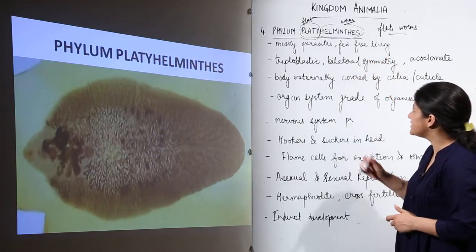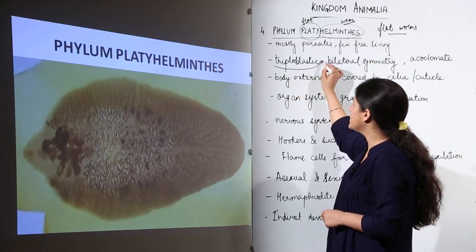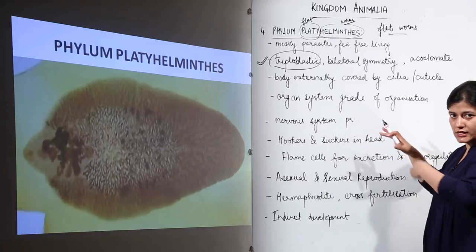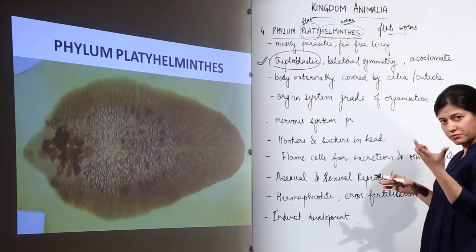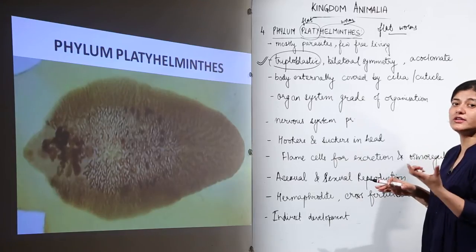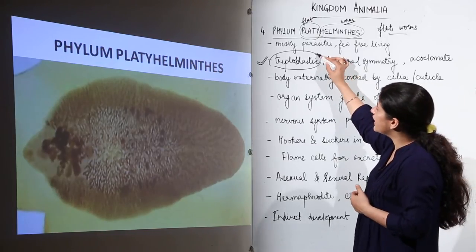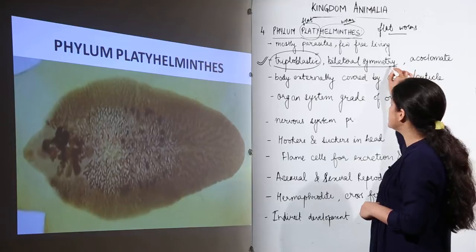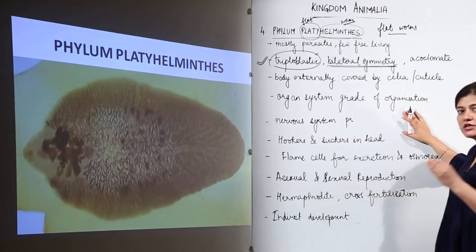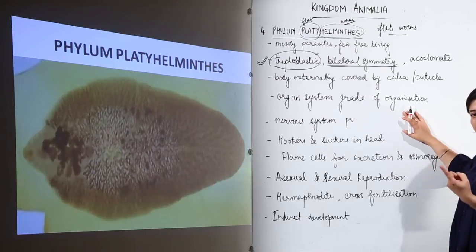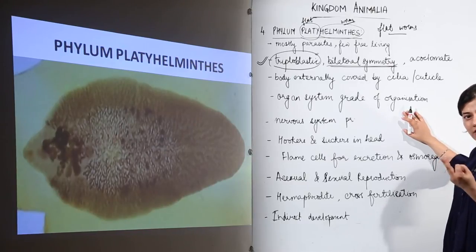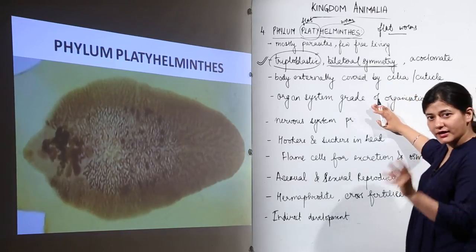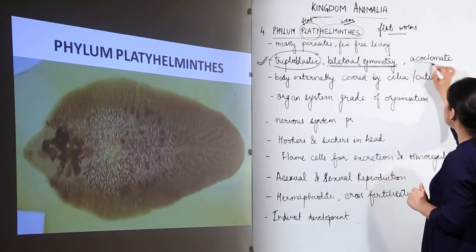Coming to their characteristics: first, we find a clear-cut mesoderm, making the organism triploblastic. Until the ctenophorans, the triploblastic condition existed but the mesoderm was not truly what we call mesoderm. Here we have three clear germ layers, making the organism triploblastic. It is also bilaterally symmetrical. From here onwards, all organisms we study will be bilaterally symmetrical, unlike earlier phyla which were asymmetrical or radially symmetrical.